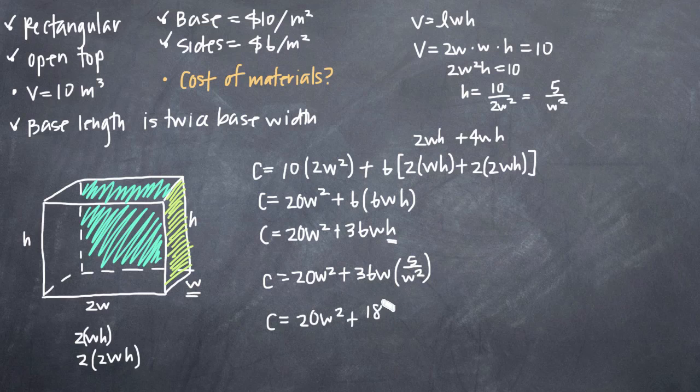20w squared plus 36 times 5 is 180. So 180 divided by w and that's it. There's our cost function in terms of the width of the base or w.